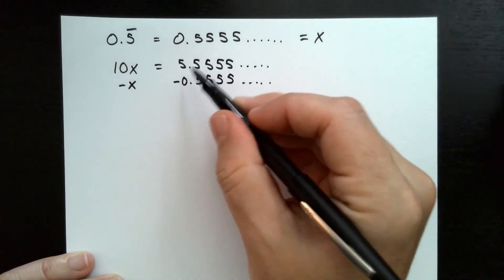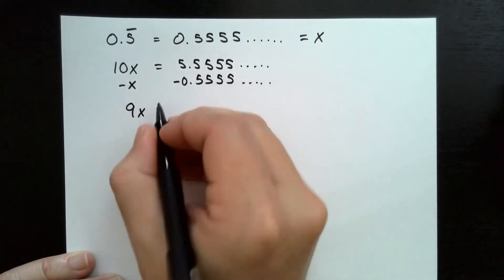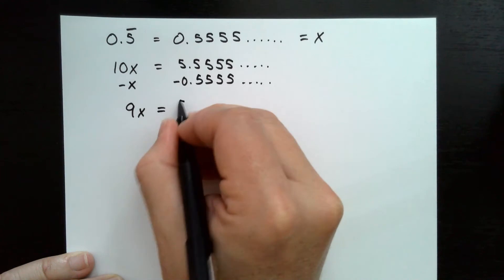The only ones left is the 5. So over here, I get 10x minus x, which is 9x. And on the right side, I get just 5.